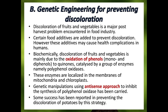Genetic engineering for preventing discolouration: discolouration of fruits and vegetables is a major post-harvest problem in the food industry. Discolouration is mainly due to the oxidation of phenols into quinones, catalyzed by the enzyme group polyphenol oxidase, localized in membranes of mitochondria and chloroplasts. By genetic manipulation using the antisense approach, polyphenol oxidase has been inhibited, successfully delaying or preventing discolouration of vegetables or fruits, for example in potato.